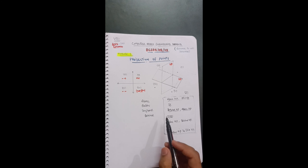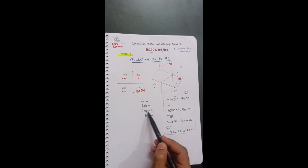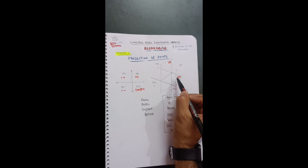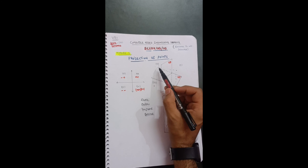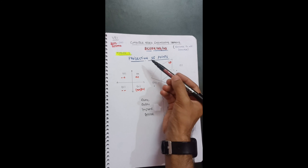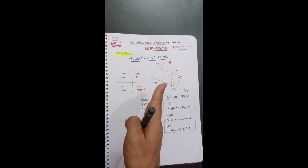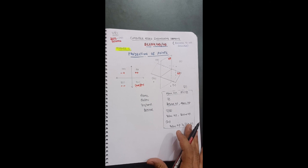To summarize the four quadrant terminologies: First quadrant — above HP and in front of VP. Second quadrant — above HP and behind VP. Third quadrant — below HP and behind VP. Fourth quadrant — below HP and in front of VP. These are the important terminologies to focus on and remember for projection of points.